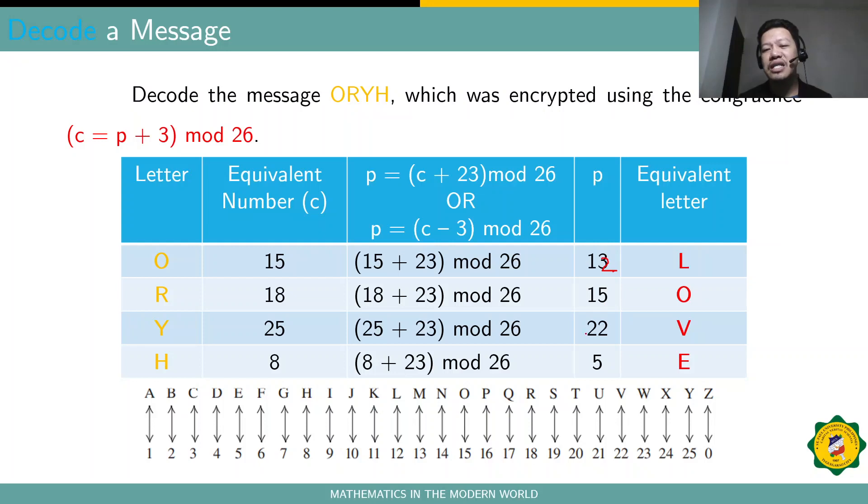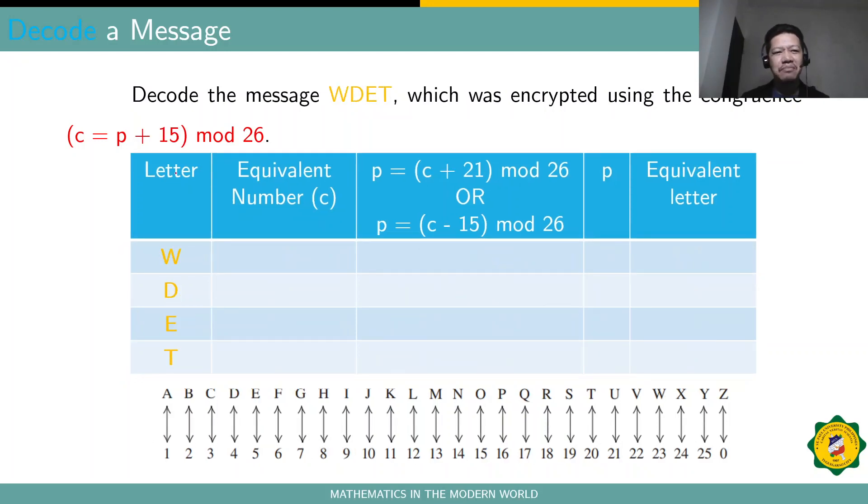And then, you need to get the corresponding equivalent letter of these numbers. So, 12 is actually L, 15 is O, 22 is V, and 5 is E. That's it. You already cracked the code. So, the meaning of these letters here, O, R, Y, H is actually LOVE. So, you already decrypted or decoded the message. And, the sender actually sends you a message, LOVE. So, that's how to decode a message.